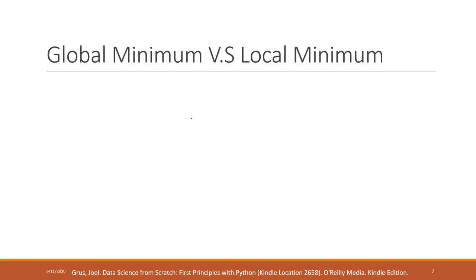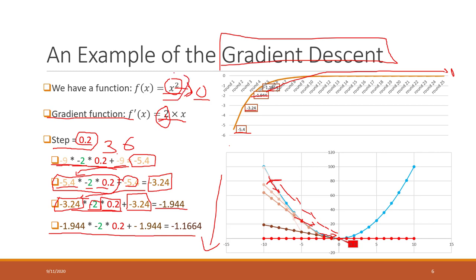You may wonder — this function is very simple, so why do you need this? Well, in some cases the function may have multiple variables and be very complicated. You cannot find the minimum or maximum directly. In that case, gradient descent will be very helpful.